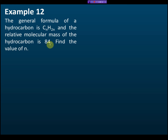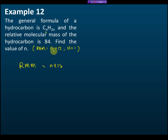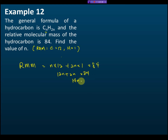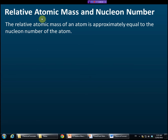Example 12: The general formula of a hydrocarbon is CnH2n, and its relative molecular mass is 84. Find n. The relative atomic mass of carbon is 12 and hydrogen is 1. So the relative molecular mass equals n times 12 plus 2n times 1, which gives 14n equals 84, therefore n equals 84 divided by 14, which equals 6.